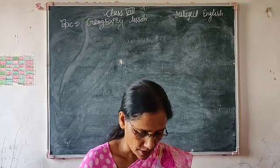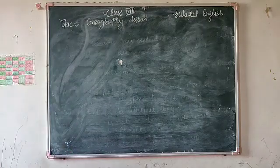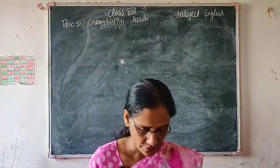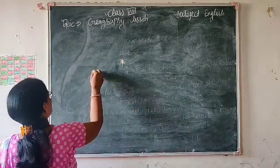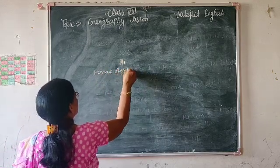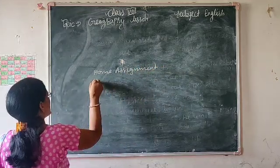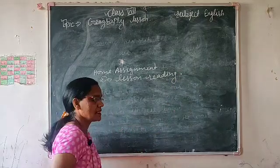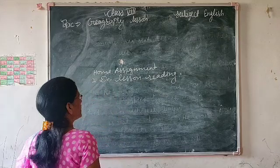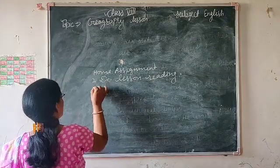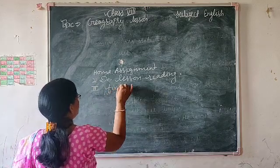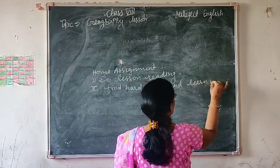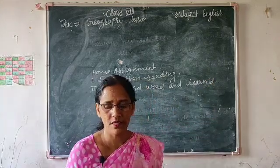Next lesson will be Glimpses of the Past - Glimpses means jhalak (glimpse), of the past means gujare kaal ki (of the past) - we will study about glimpses of the past in the next lesson. So students, at this time I have concluded my lesson. You noted your home assignment. Do lesson ready. Exercise is not required because this point is related to the knowledge of geography. Find the answers and learn them. See you next day.